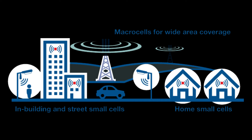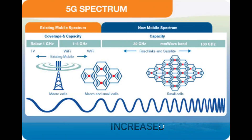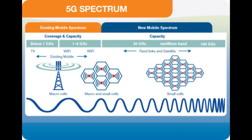Small cells are essential for 5G networks as the millimeter wave frequencies have a very short connection range. In many countries, the initial frequency bands for 5G are below 6 GHz, in many cases in the 3.3 to 3.8 GHz bands — similar frequencies to existing mobile and Wi-Fi networks.